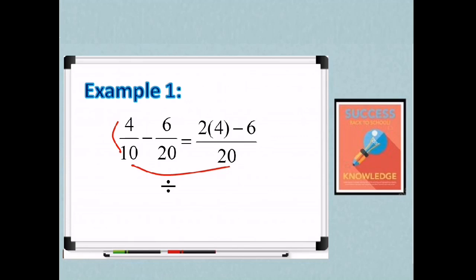And then, yung sa next fraction is 6 over 20. So 20 divides 20 is 1. Then kapag minultiply natin sa taas, that is 6. Then simplify, 2 times 4 is 8 minus 6 over 20. So ngayon, we need to subtract the numerators. So 8 minus 6 is 2 over 20.